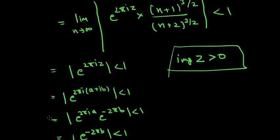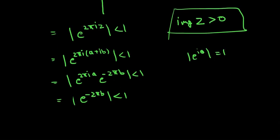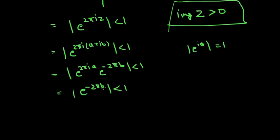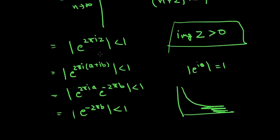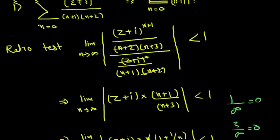Change z to a + ib and break this like we did above. The modulus is interesting because |e^(iθ)| = 1. When b > 0, this exponential will have a very small value, making it less than one. So the region is when the imaginary part of z is greater than zero. This is how we find the region and interval of convergence for series using the ratio test.